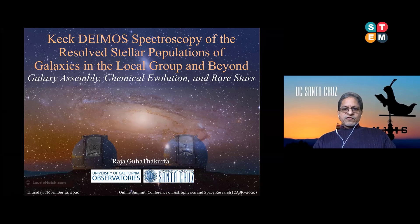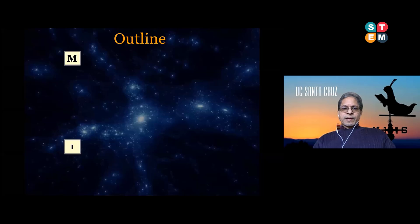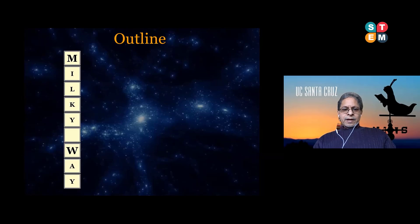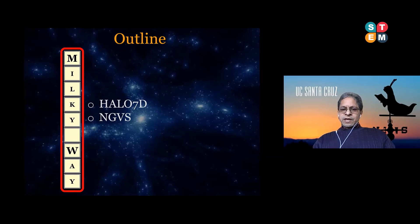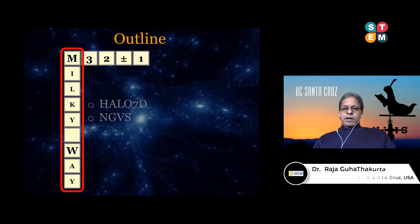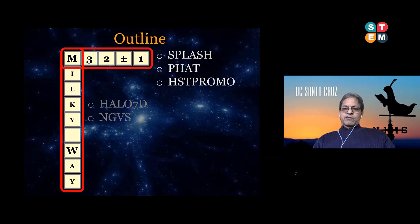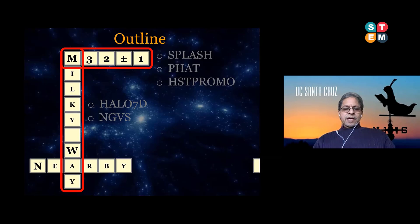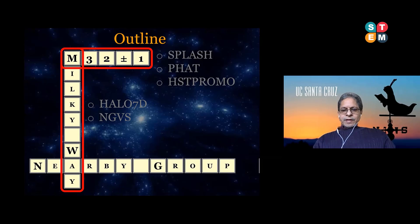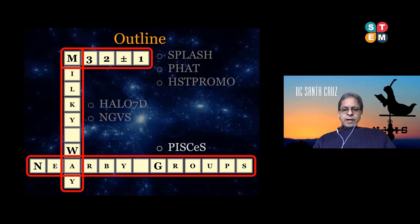Moving forward, this is the theme of my talk. I'll talk about the assembly of the Milky Way galaxy through two surveys: the Halo 7D survey and the Next Generation Globular Cluster Survey. Then I'll talk about three galaxies in the local group — M31, M32, and M33 — through the lens of three surveys named SPLASH, PHAT, and HST-PROMO. Finally, I'll talk about galaxies in nearby groups of galaxies through the Pisces survey.